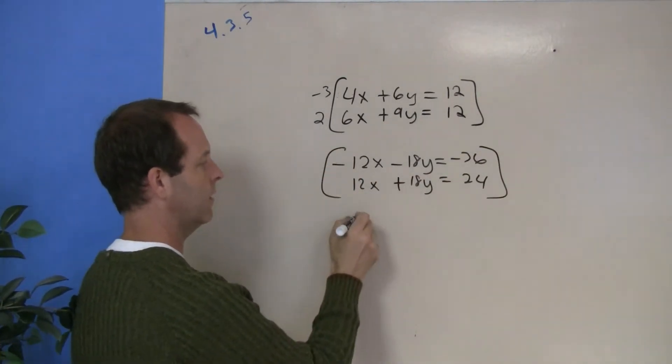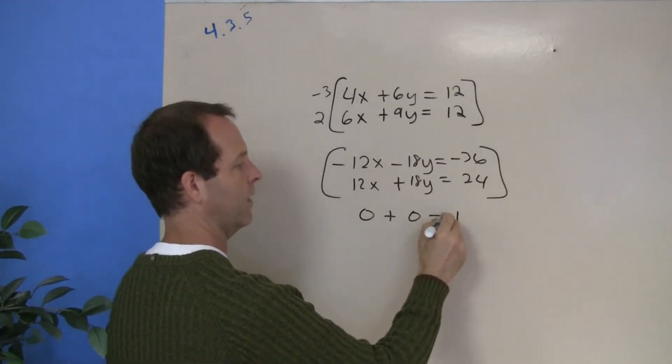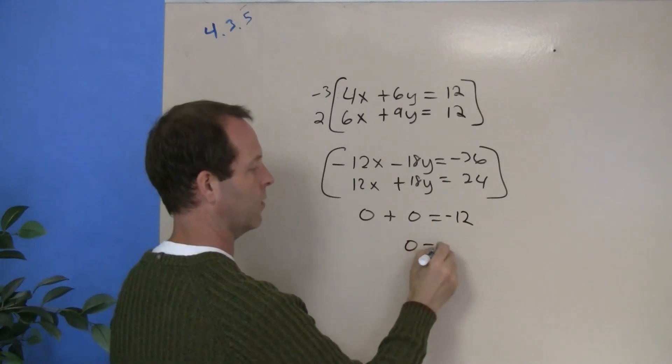Add my system together. 0 plus... look the y's also cancel out. Now I'm left with a negative 12. 0 equals negative 12.